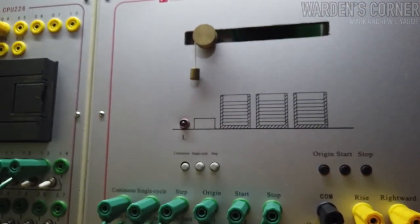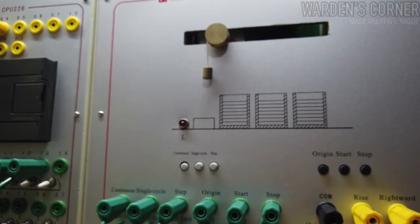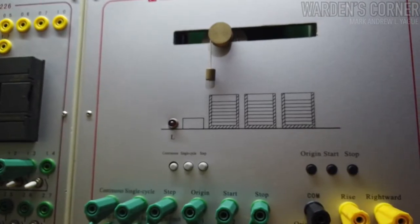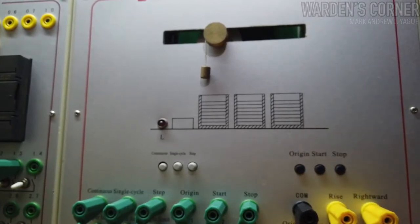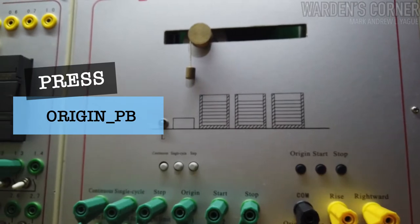In a worst-case scenario, due to unmet conditions, you need to stop the process in the middle of the operation. Is it possible to retrieve the workpiece to its original location without compromising the logic program? Yes, you only need to create a logic program structure that allows the workpiece to go back to where it started.